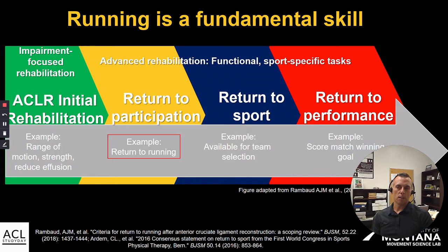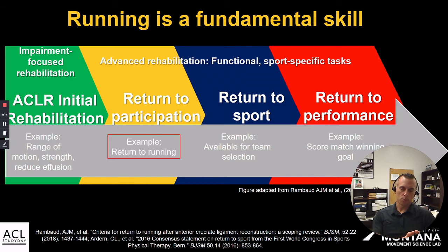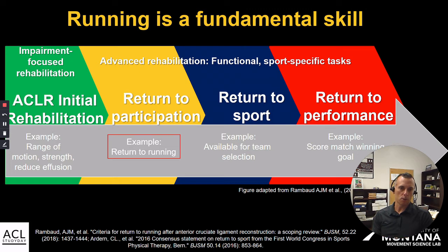I'm not going to speak too much on the impairment-focused rehabilitation that we see in this continuum set up by Claire Ardern and colleagues in their publication in BJSM on the consensus statement on return to sport. The idea behind this consensus statement was not so much about return to sport, but more about return to performance — the idea that there are several really important intermediate steps. Once we get past the impairment-focused rehabilitation phase, we move into return to participation, where running starts to play a larger and more important role. From there, the athlete moves forward to return to sport and return to performance.